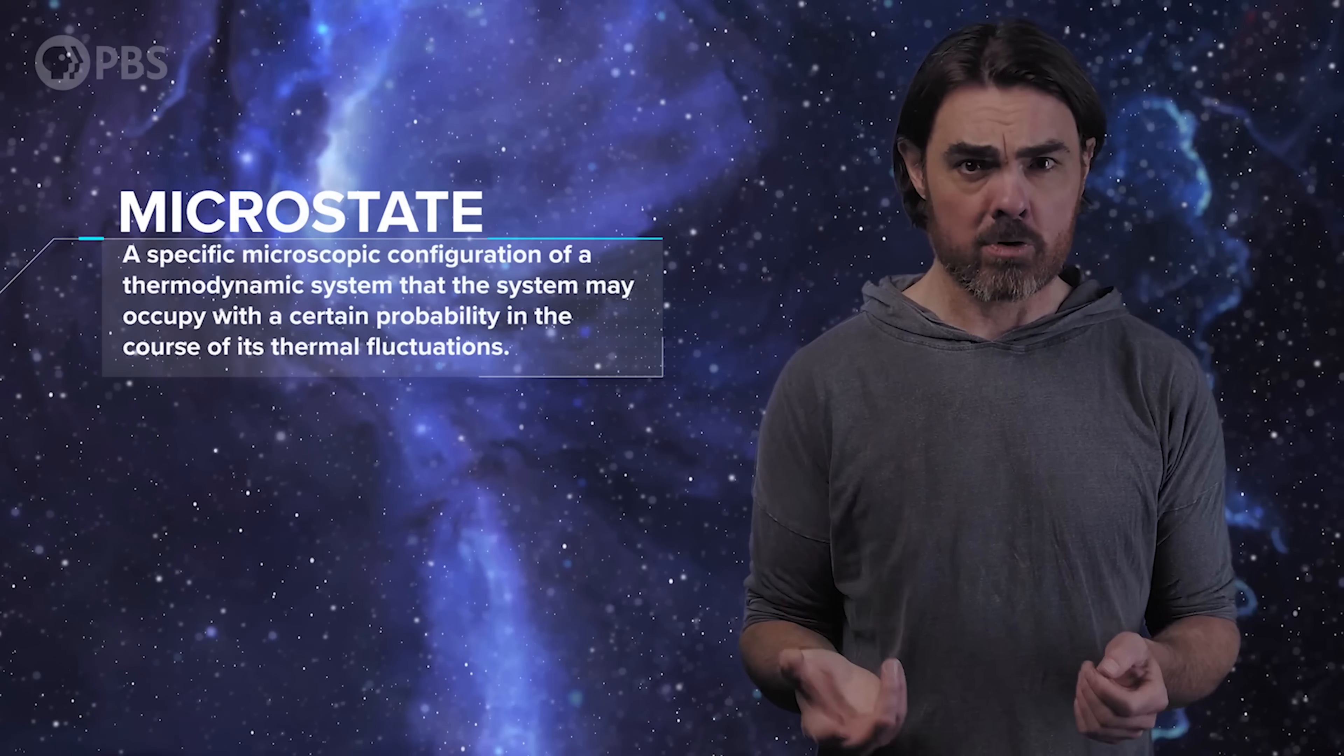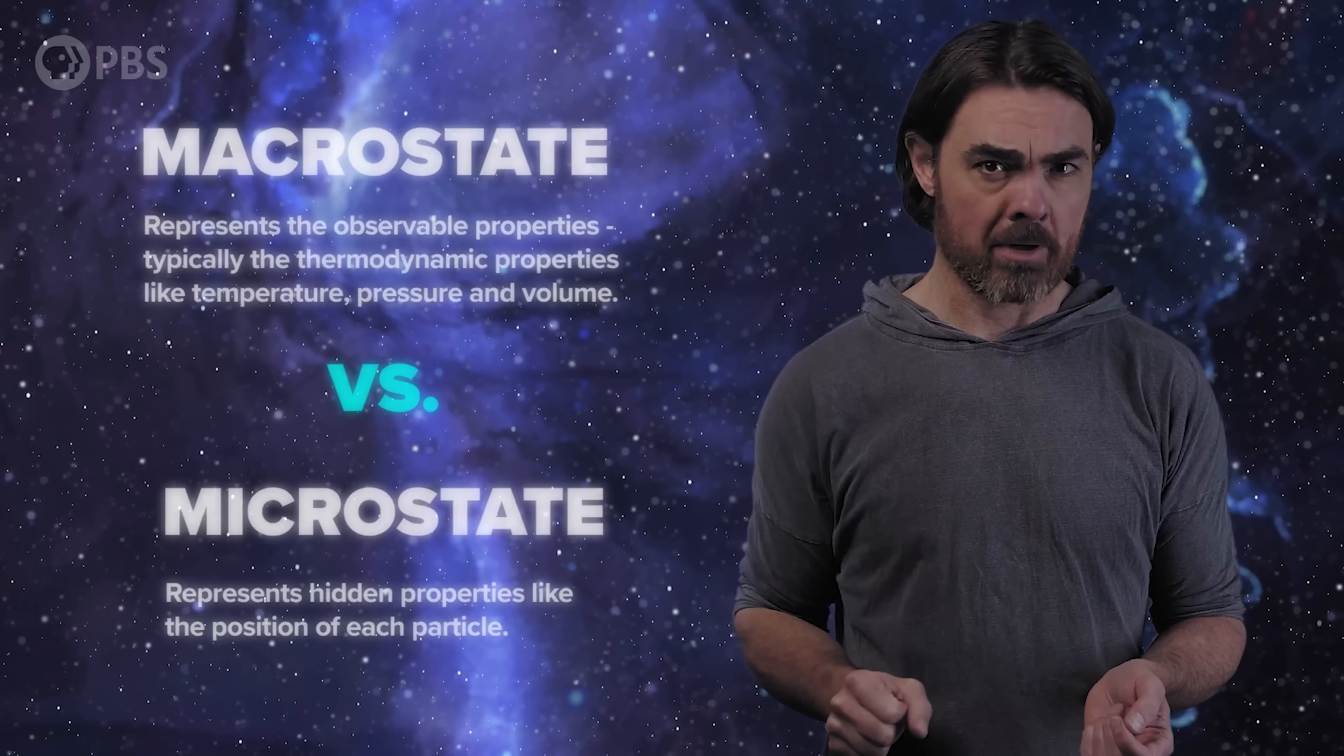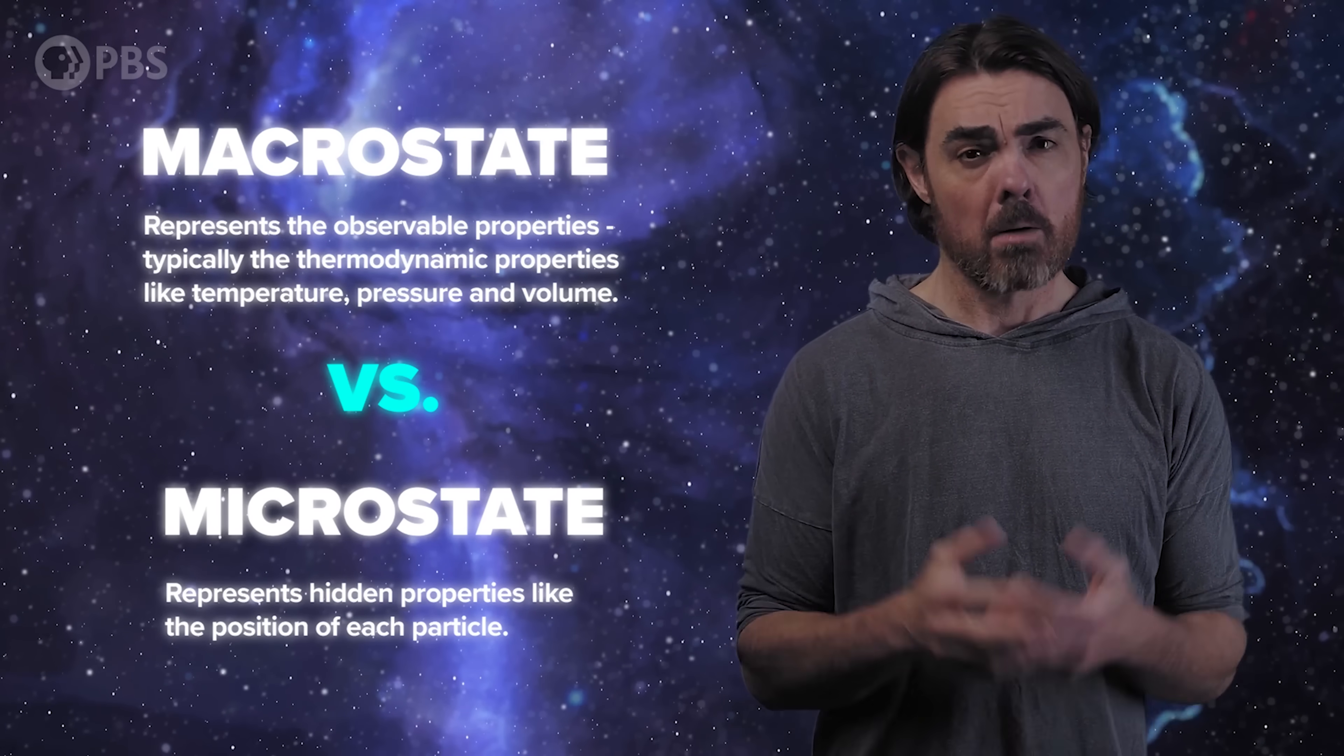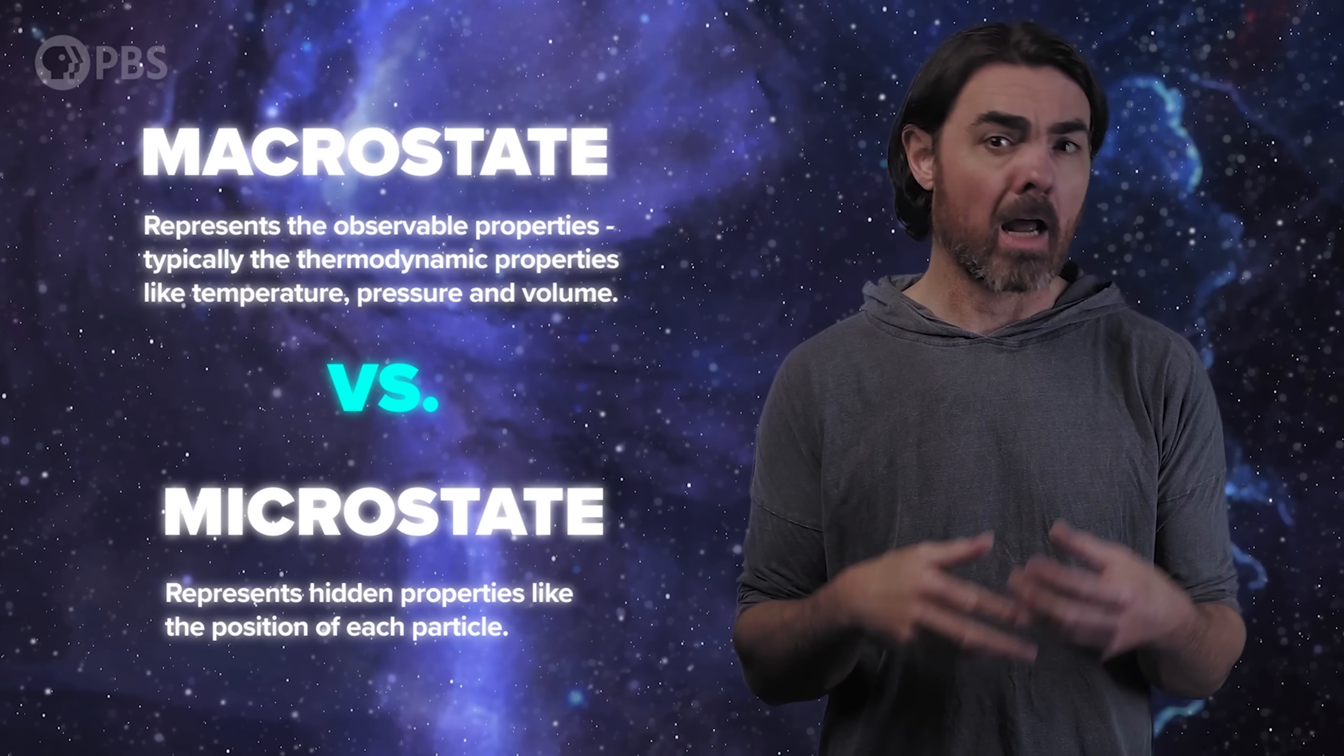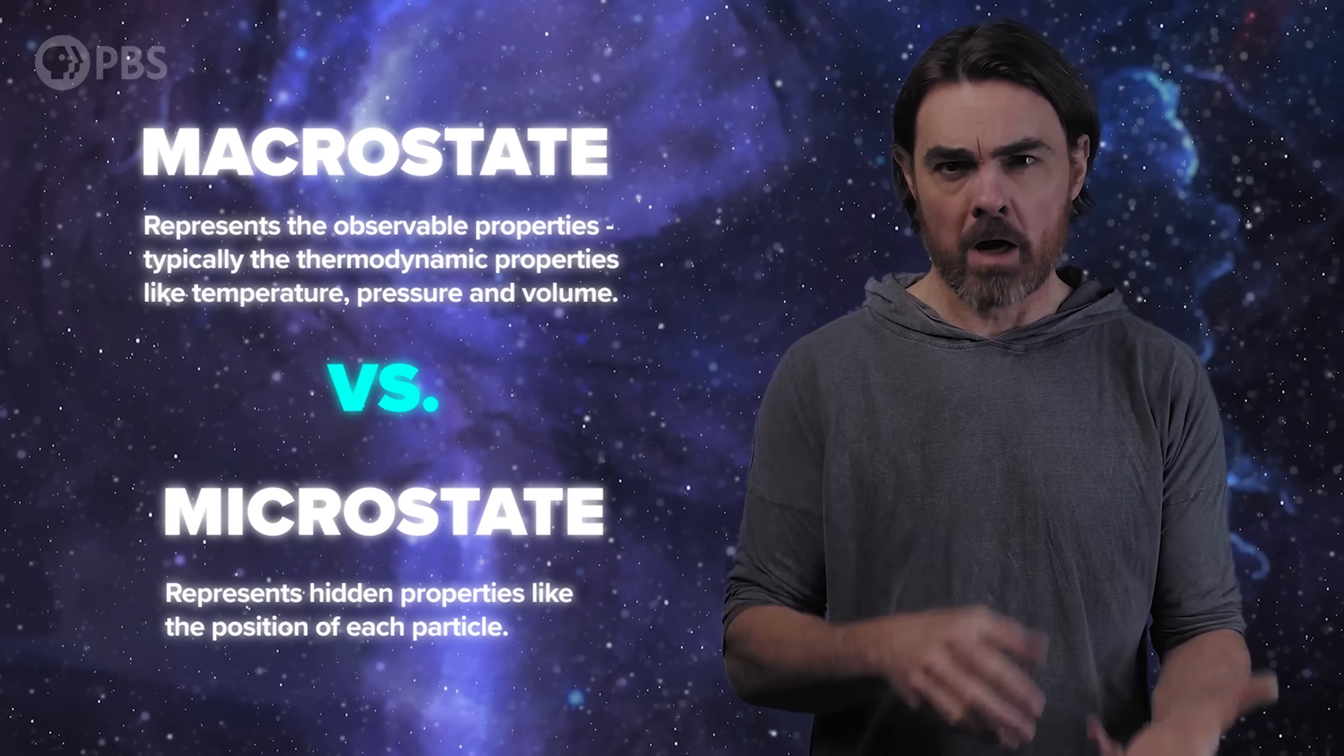There are also vastly more configurations in which the air molecules are roughly evenly spread through the room than there are more ordered configurations. In statistical mechanics, we call each specific configuration of balls or air molecules a microstate, while the general shape of the distribution, say, smoothly spread or bunched up, is a macrostate. A macrostate represents the observable properties, typically the thermodynamic properties like temperature, pressure and volume. Microstates represent hidden properties like the position of each particle, and each macrostate will correspond to many potential microstates.